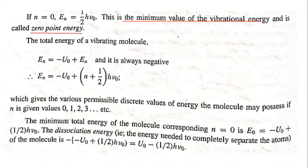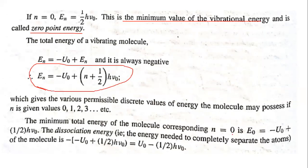The total energy is the sum of potential energy plus kinetic energy, rearranged as Eₙ equals minus u₀ plus (n plus half) h·ν₀. This gives the various permissible discrete energy values the molecule may possess for n equal to 0, 1, 2, 3, etc. The minimum total energy at n equal to zero is E₀ equals minus u₀ plus half h·ν₀. The dissociation energy of the molecule — the energy required to break the molecular bond — is u₀ minus half of h·ν₀. This is why we call it simple harmonic motion for the vibrating diatomic molecule.